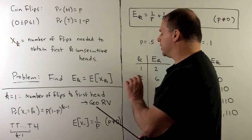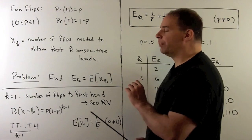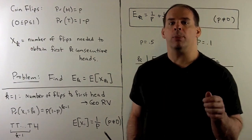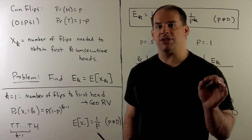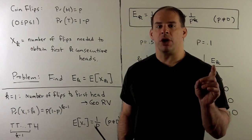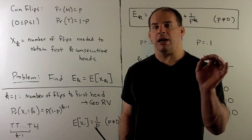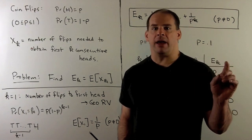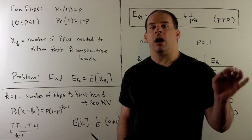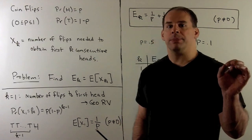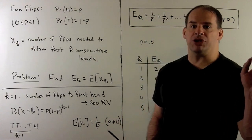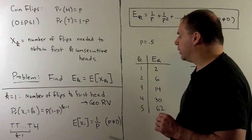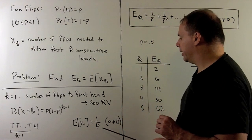Now, if p is equal to 0, no matter how many flips we do we're never going to get a heads, so e of x sub 1 is going to be undefined. Otherwise, the mean of a geometric random variable is just going to be 1 over p.